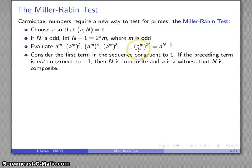We'll find this first term that's congruent to 1 and look at the preceding term. If the preceding term is not congruent to minus 1, then we know that n is a composite number, and a is a witness that n is composite.